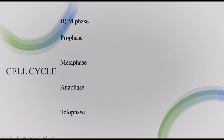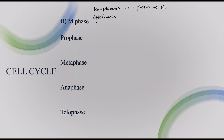Now we are entering into the M phase. In M phase, karyokinesis and cytokinesis are going to happen. Karyokinesis consists of four phases. Karyokinesis means nuclear division, and cytokinesis is cytoplasm division. In karyokinesis there are four phases.